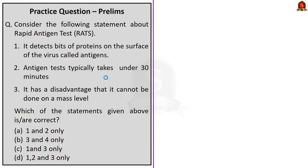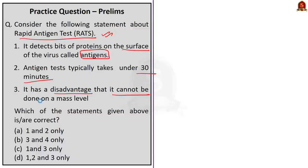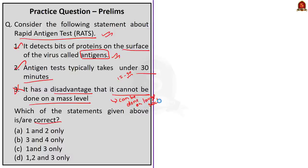The last prelims practice question is about rapid antigen test: 'Consider the following statements about rapid antigen test (RATs): Statement 1: It detects bits of protein on the surface of the virus called antigens. Statement 2: Antigen test typically takes under 30 minutes. Statement 3: It has a disadvantage that it cannot be done on a mass scale.' RATs detect bits of protein on the surface of the virus called antigens. The antigen test typically takes 15 to 30 minutes. So statements 1 and 2 are correct. But statement 3 is incorrect because RATS can be done on a mass scale — it is in fact a major advantage of RATS over RT-PCR, and the number of tests that can be performed can be easily scaled up. Since statements 1 and 2 are correct and statement 3 is incorrect, the correct answer is option A: 1 and 2 only.